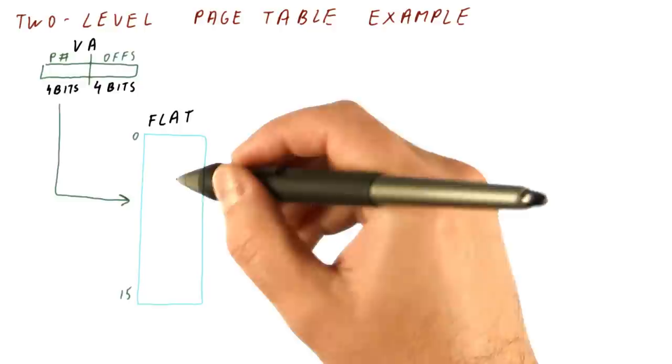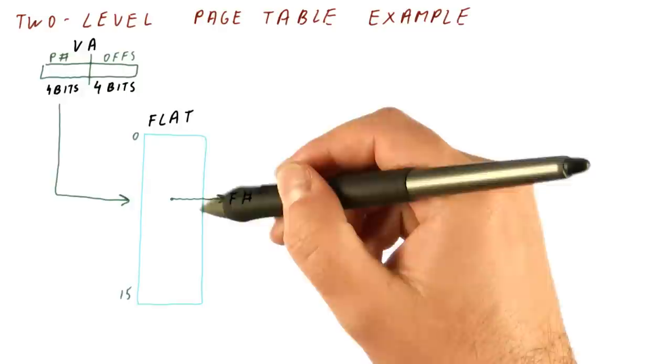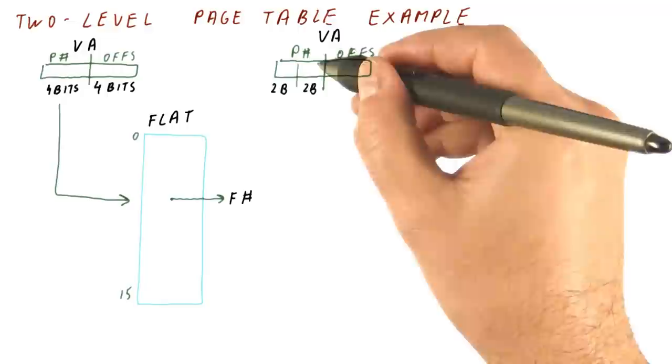With the two-level page table, let's say we split this four-bit page number into two two-bit pieces. So the same virtual address still has a four-bit page number that we split into two two-bit pieces.